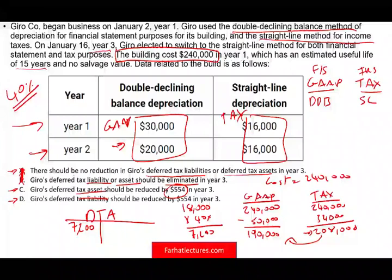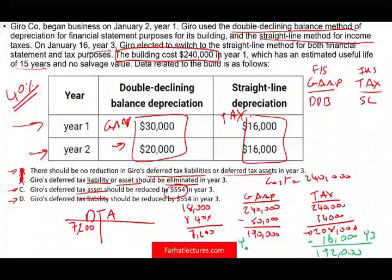When they switch in year three, the deferred tax asset won't reverse to exactly $7,200 — mathematically it won't equal. In year three, for tax purposes we keep deducting $16,000, so we take $208,000 minus $16,000, giving a tax basis of $192,000. For GAAP, we now use straight line: $190,000 book value divided by 13 remaining years gives depreciation of $14,615 for year three.